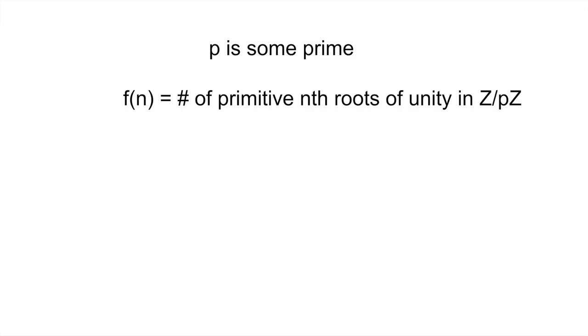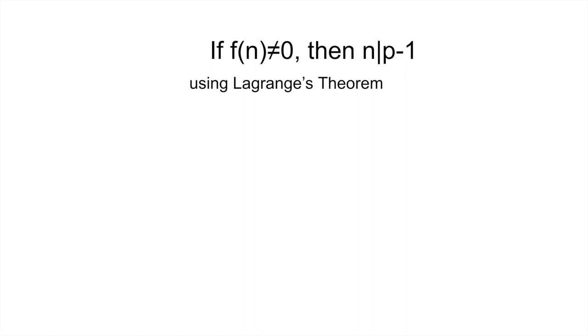Fix some prime number p and let f of n be the number of primitive nth roots of unity there are in Z over pZ for some whole number n. That is, how many numbers are roots of x to the n minus 1, but not of x to the m minus 1 for any smaller whole number m? Well, if f of n is non-zero, Lagrange's theorem implies that n must divide p minus 1.